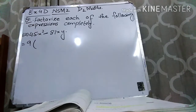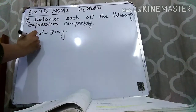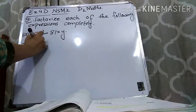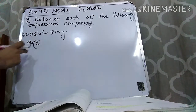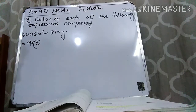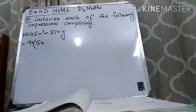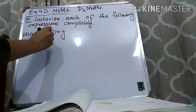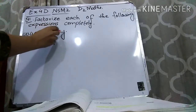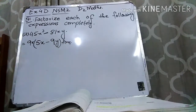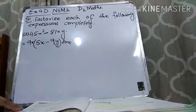So we take 9 common: 9 times 5 is 45, and we also take X variable common because X is present in both terms. 9 times 5 is 45, and 1 X is left from X square. Then 9 times 9 is 81, and Y is left. So the answer is 9X(5X + 9Y). I hope this question is clear.